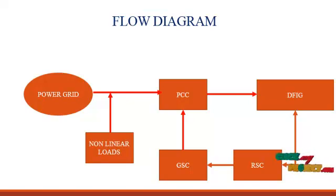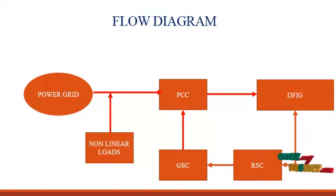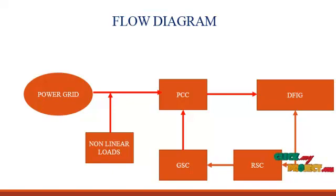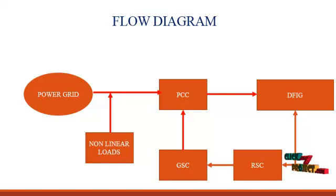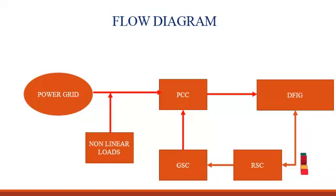It is controlled by the Grid-Side Converter and Rotor Side Converter. Wind turbines are used to generate electricity from the kinetic power of the wind. Historically, they were more frequently used as mechanical devices to turn machinery. There are two main kinds of wind generators: those with a vertical axis and those with a horizontal axis. Wind turbines can be used to generate large amounts of electricity in wind farms, both onshore and offshore.